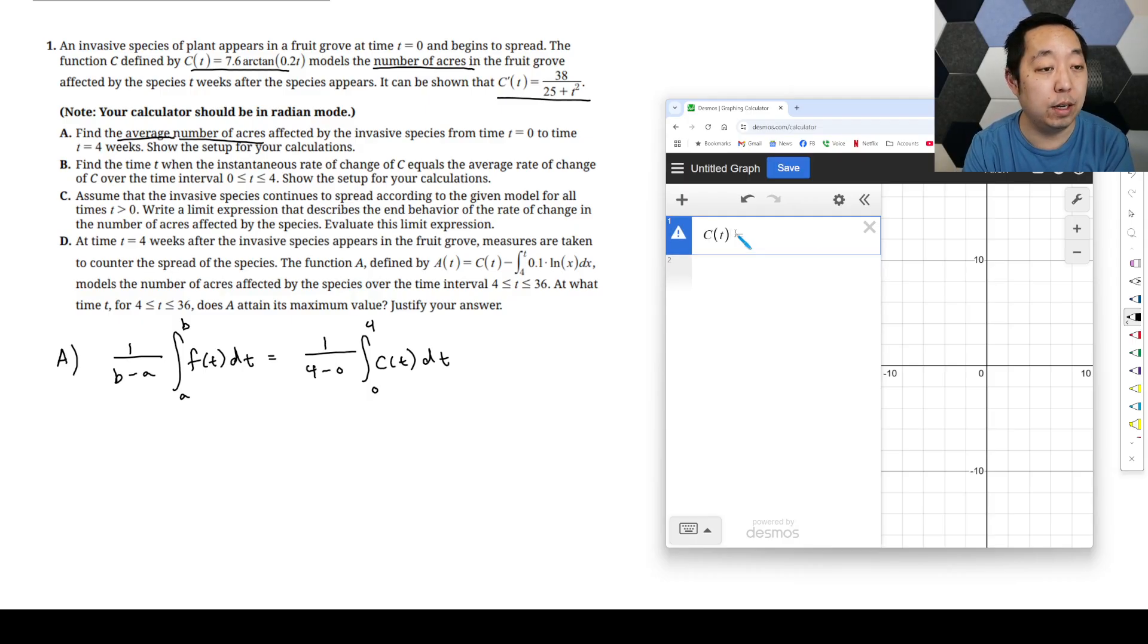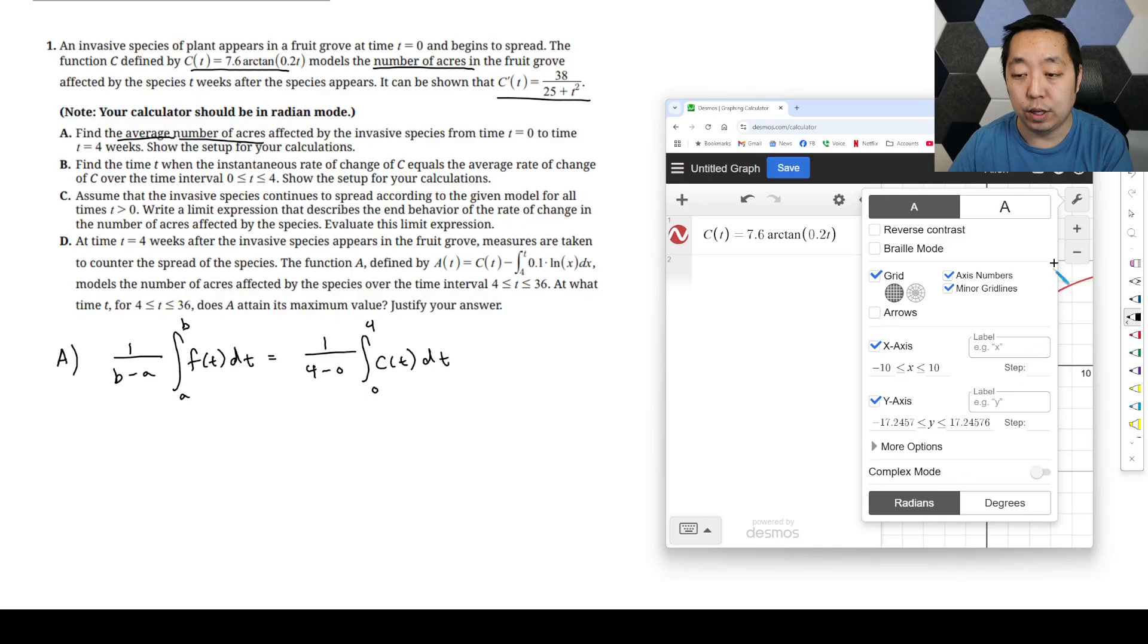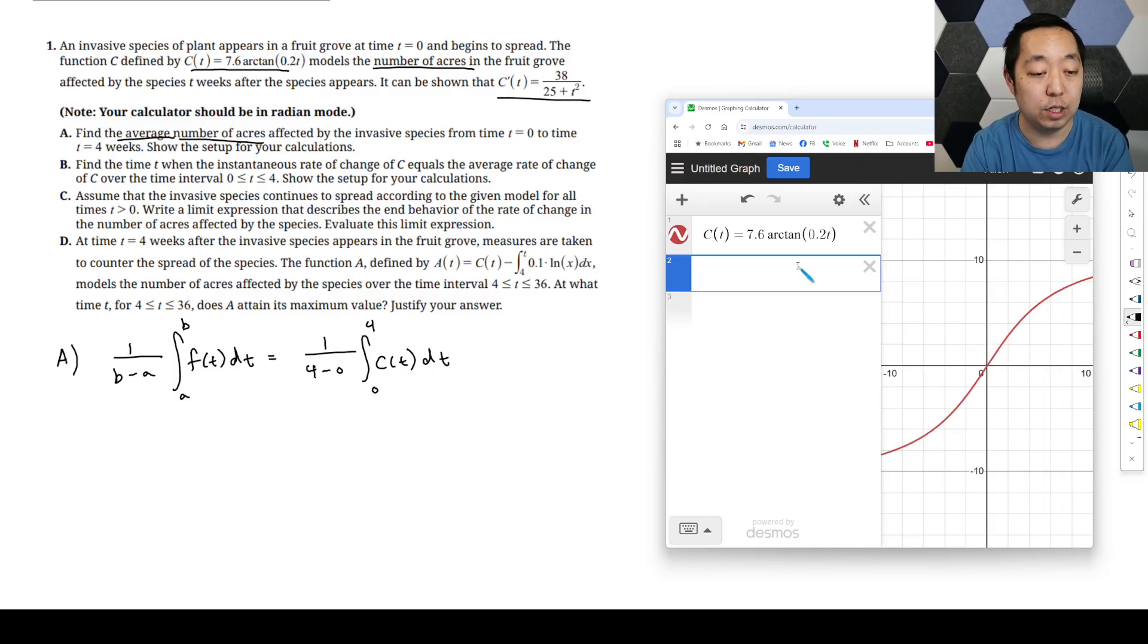For this problem, I'm just going to write it out: 7.6 arctan of 0.2T. They did remind you that it should be in radian mode, and you can always just check on here that we are indeed in radians. So that is C of T. And I want to do the integral from 0 to 4 of C of T, DT. That's going to give me 1.113, three decimal places, and then number of acres.